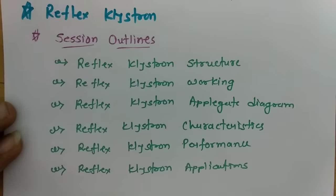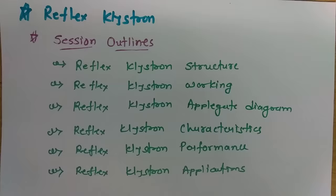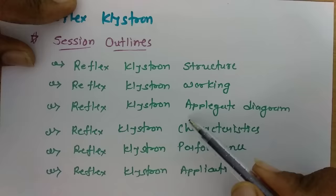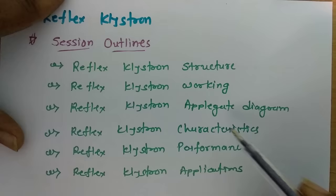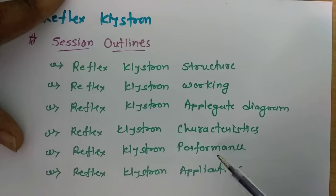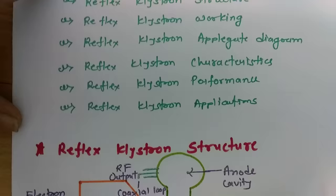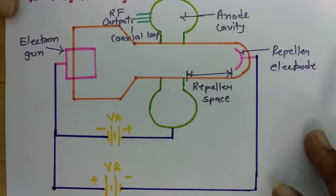In this session I will be discussing the reflex klystron. The session outline covers: first, the structure of the reflex klystron; then how it works; followed by the applegate diagram based on its working; then its characteristics and performance; and finally some applications of the reflex klystron.